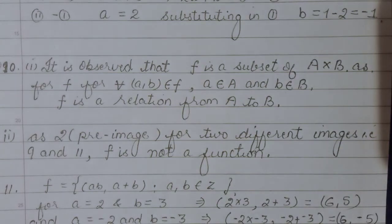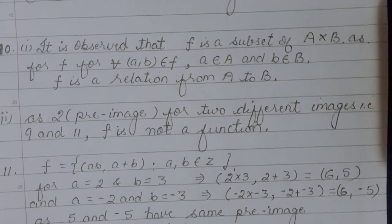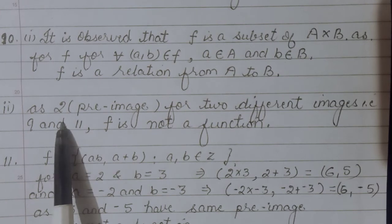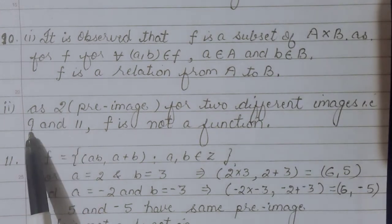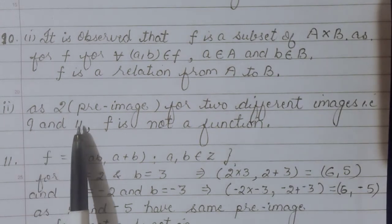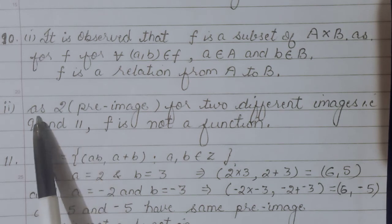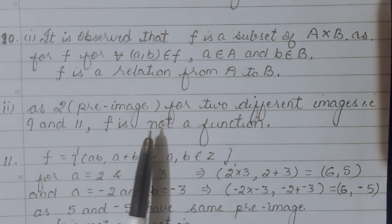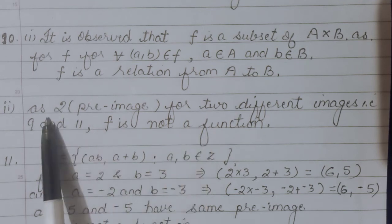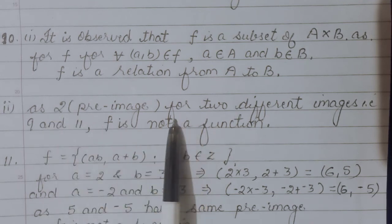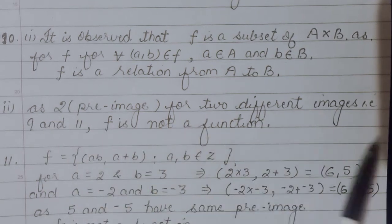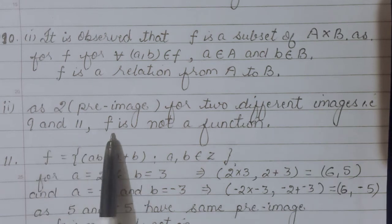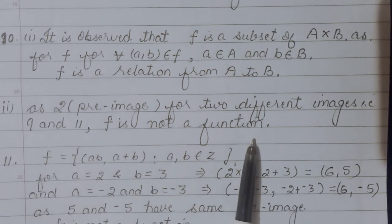For the second part, there's the ordered pair (2,9) and also (2,11) present. The pre-image is repeated. As soon as pre-image is repeated, it is not going to be a function. We say as the pre-image of two different images 9 and 11 is same, f is not a function.